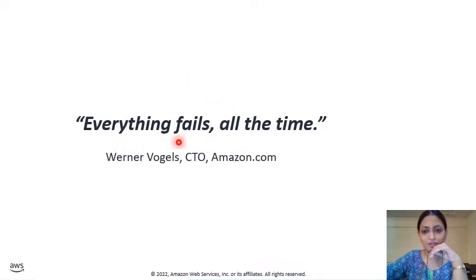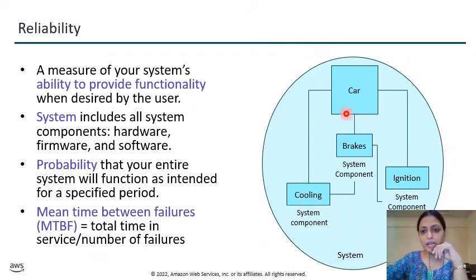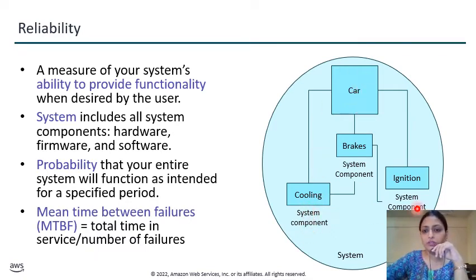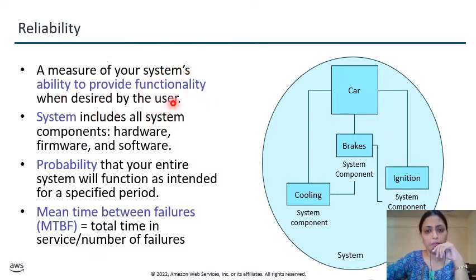We start with a statement by Werner Vogels, the CTO of Amazon.com: 'Everything fails all the time.' What is reliability? We have a system consisting of components — if we're talking about a car, it has components like a cooling system, brakes, ignition, etc. Reliability is a measure of your system's ability to provide functionality as required by the user, and includes all things like hardware, firmware, and software.